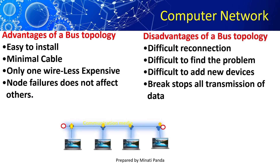If the transmission medium or the main cable fails, then the whole network goes down. If the source node wants to send data to the destination node, the data will be transferred to each and every node, so there is no security in this approach. It is difficult to connect and also difficult to find the problem.